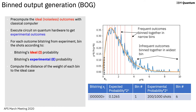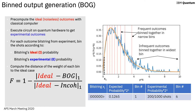We continue this with each bit string observed in our experiment, building two different distributions. For each case, we compute the distance of the weight of each bin from the ideal case and compute a fidelity — the distance away from the ideal case normalized by the distance from the ideal case to the incoherent case. Coherent noise will still drive you to a Porter-Thomas distribution, just not the correct one.